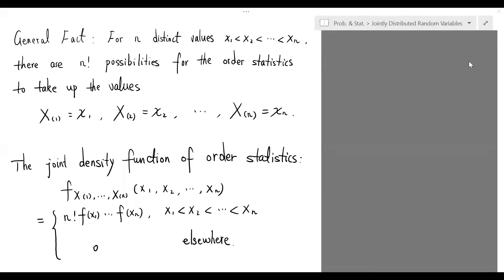This observation leads to the following important result. The joint density function of order statistics is simply given by n factorial times f of x sub 1 times all the way down to f of x sub n, when x sub 1 less than x sub 2 less than all the way to x sub n, and 0 elsewhere.